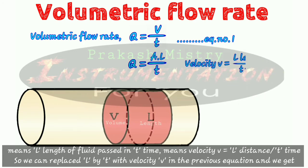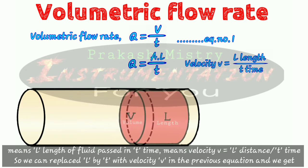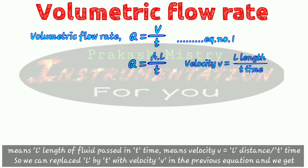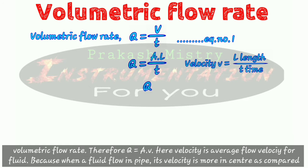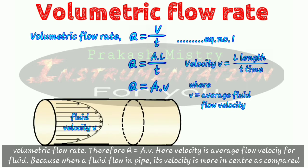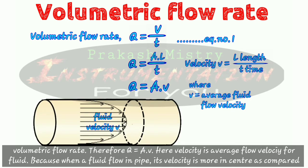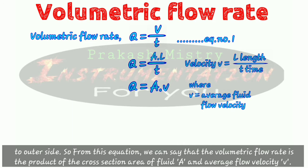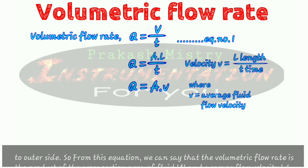In this term, L divided by T means L length of fluid passed in time T, which is velocity — V equals L divided by T. So we can replace L by T with velocity V in the previous equation and we get volumetric flow rate Q is equal to A times V. Here velocity is the average flow velocity of the fluid, because when fluid flows in a pipe its velocity is greater at the center compared to the outer side. So volumetric flow rate is the product of cross section area A and average flow velocity V.